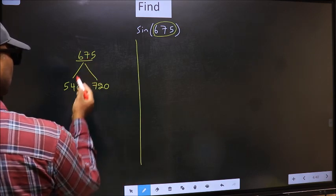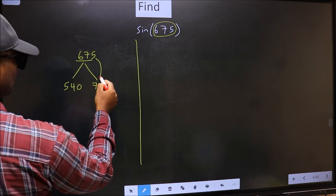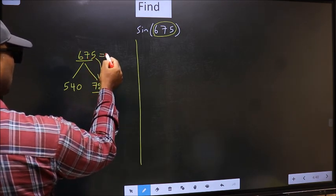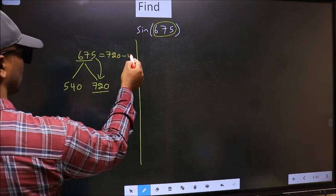Now 675 is close to which number? This is close to 720. So 675 now should be written as 720 minus 45.